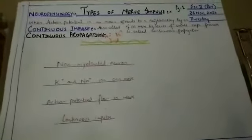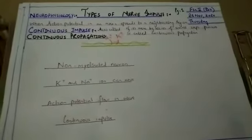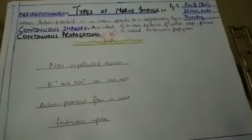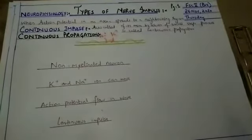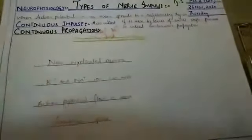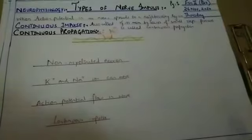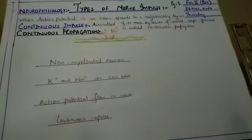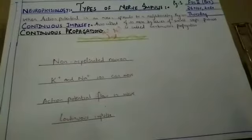So we have two types of neurons. We have two types of nerve impulses. The first type is continuous impulse, continuous propagation. When action potential, what do you mean by action potential? Action potential is the change.